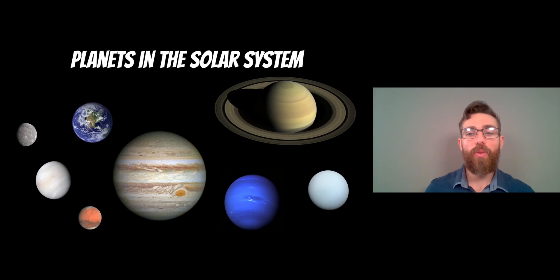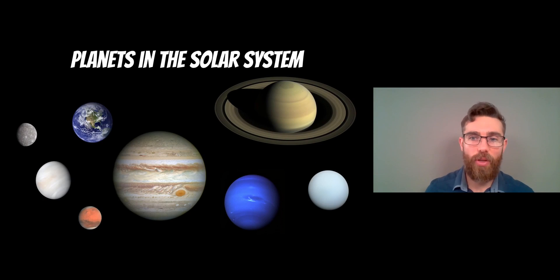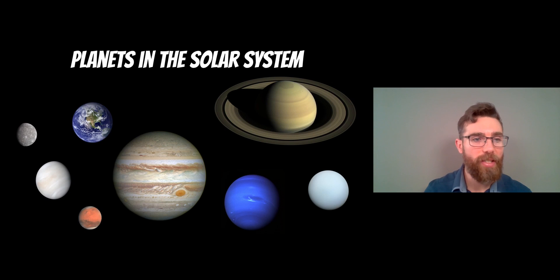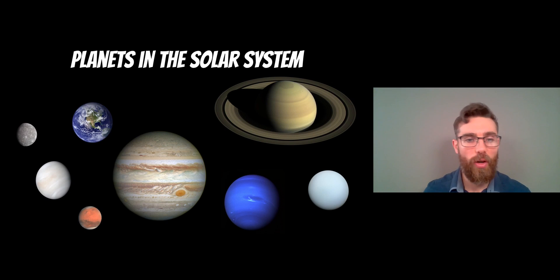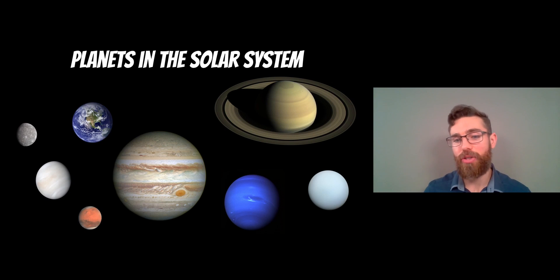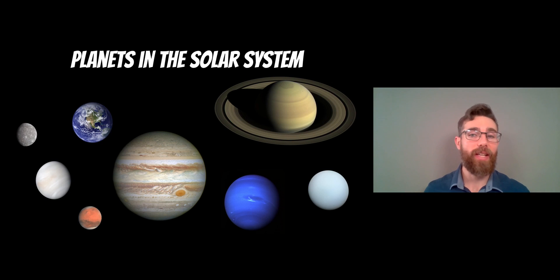We've got various planets in our solar system. Here are all of our planets: we have Mercury, Earth, Venus, Mars, Jupiter, Neptune, Uranus, and Saturn. These are our planets.